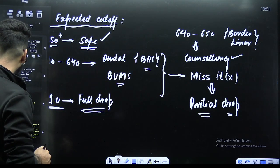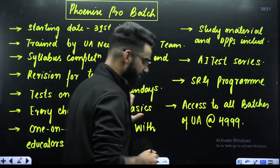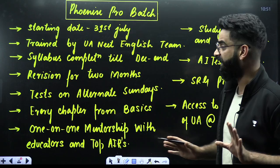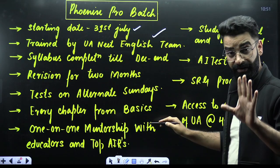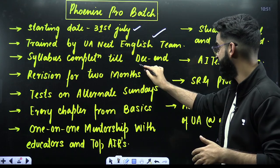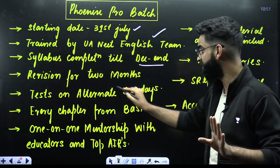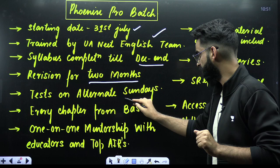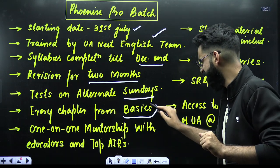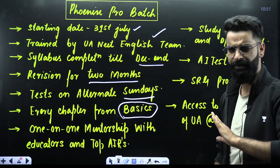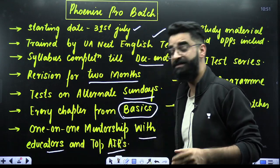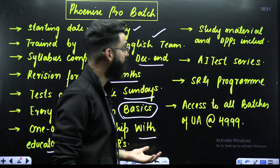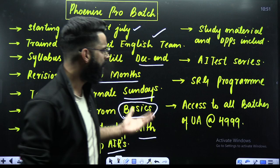Every single thing with whatever is required for the competitive examination to be cracked with a good score, all those parameters are incorporated into that particular batch. The batch is starting on 31st of this month. This is the Phoenix Pro batch which I'm talking about. It is 31st of July. You are getting trained by your Unacademy English team, that means us. Syllabus completion by December end. Revision for two months. Tests on alternate Sundays. Every chapter will be started from the basics, from the scratch. You need not to worry about anything. One-on-one mentorship with the top All India rankers as well as the top educators of the country. Study material, DPP included.